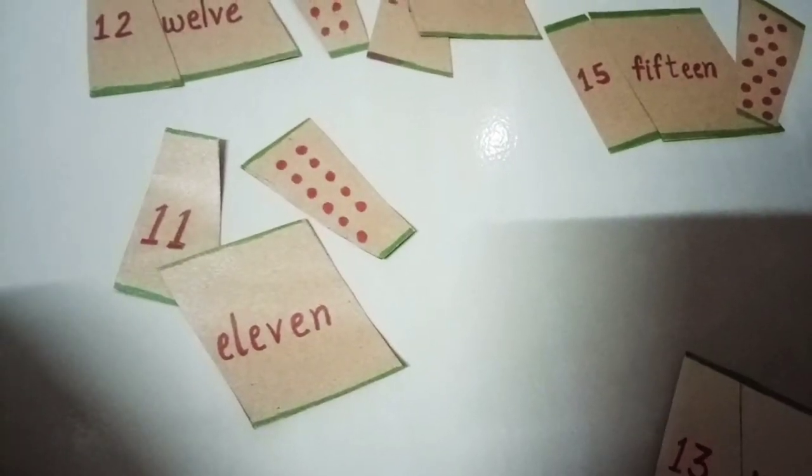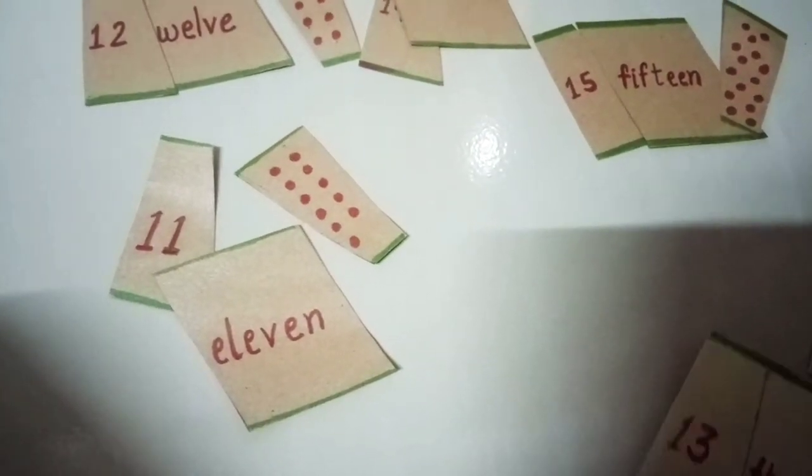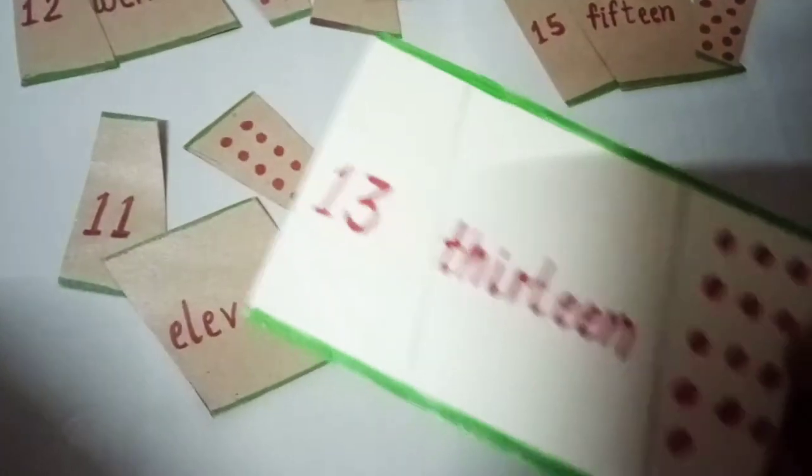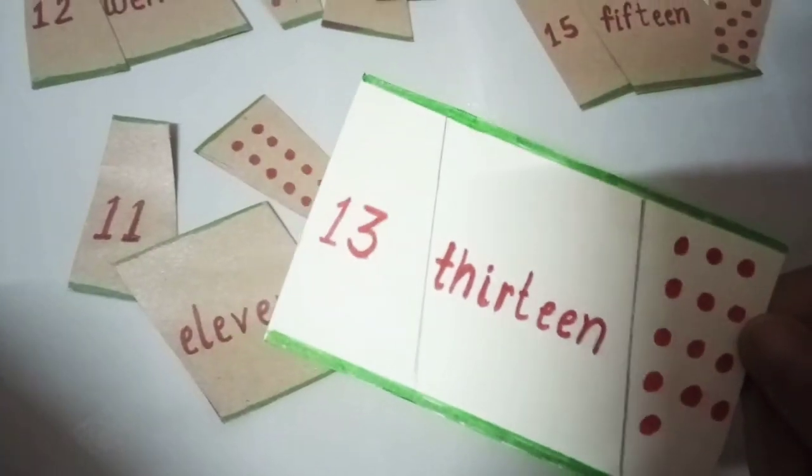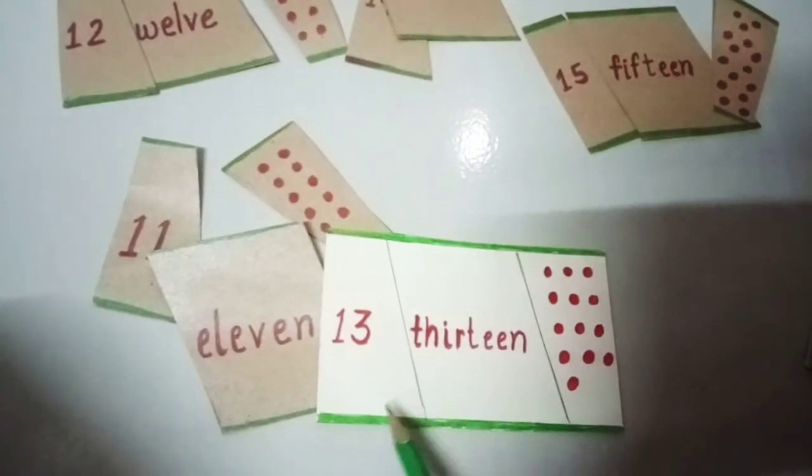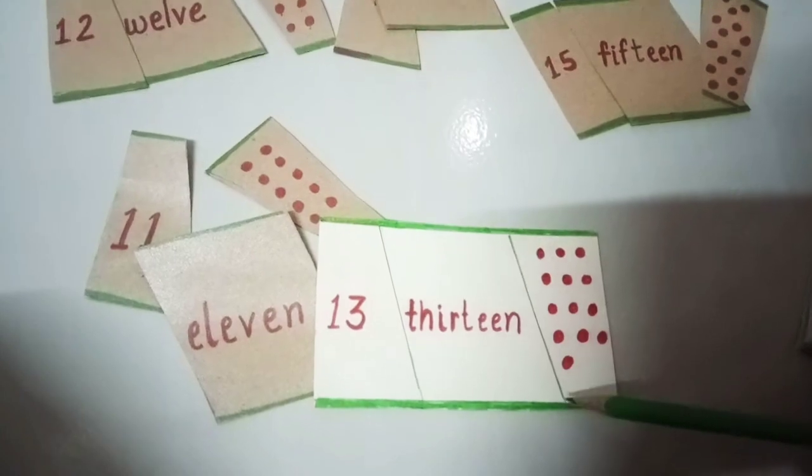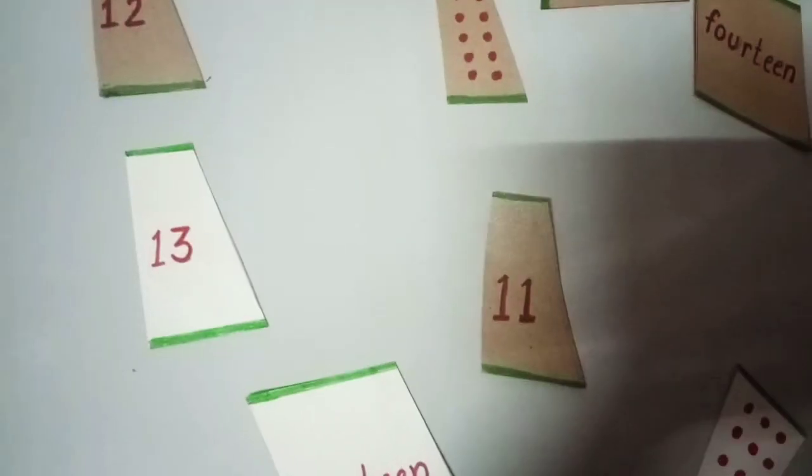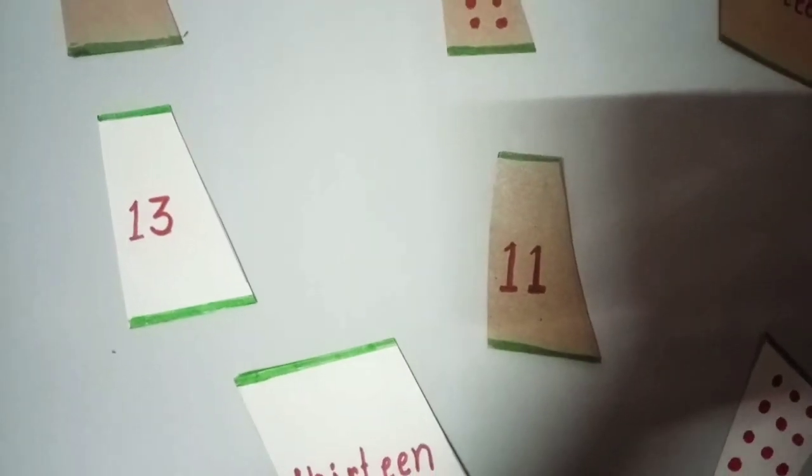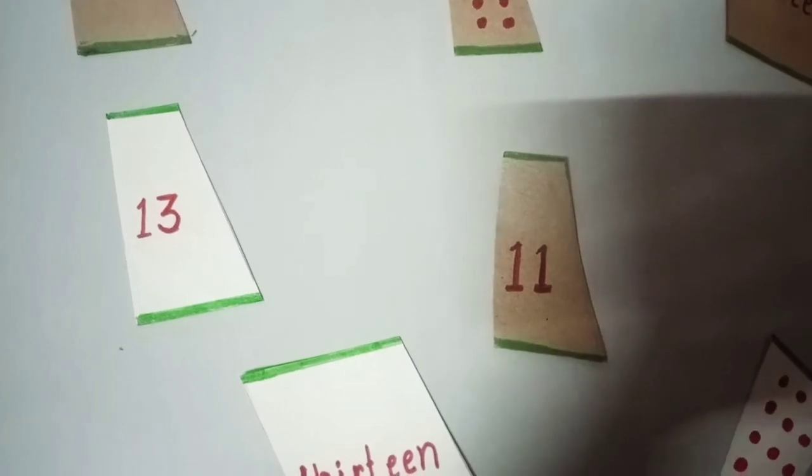Now I will tell you how you will create a number puzzle. For this you need a rectangular piece of paper and you will divide this into three parts by drawing two slanting lines. Now our number puzzle is ready and let's try to complete it.